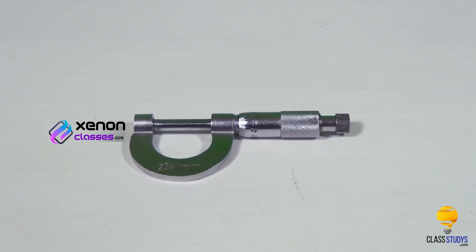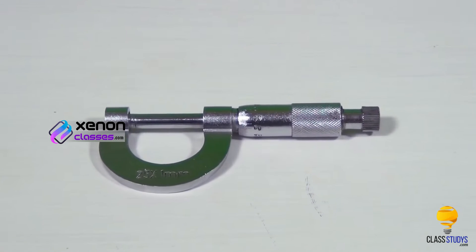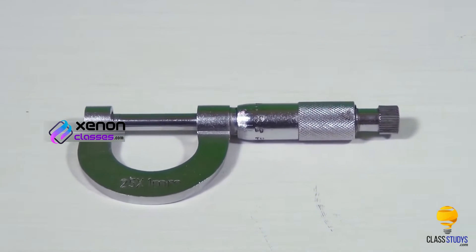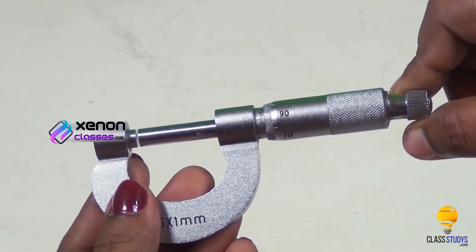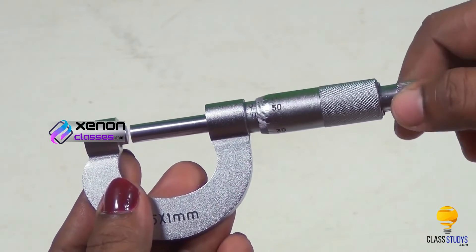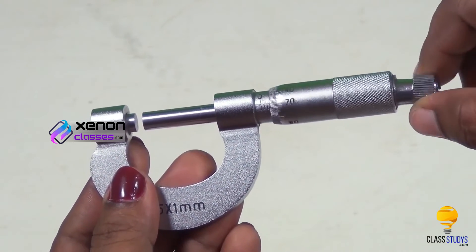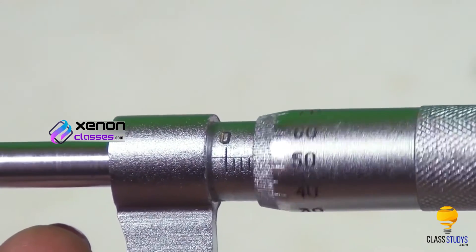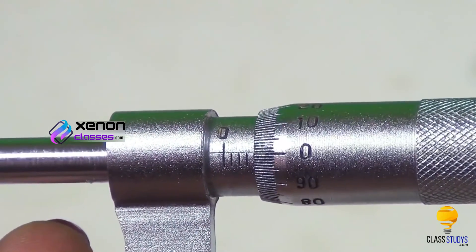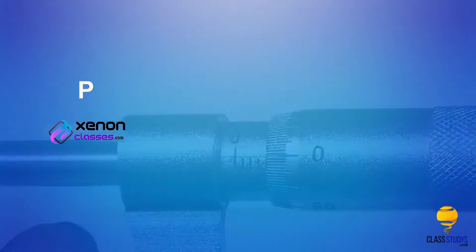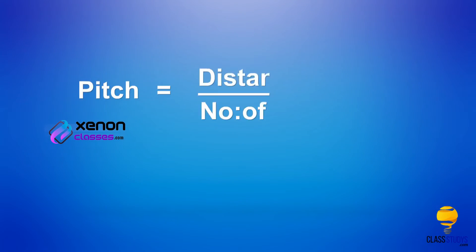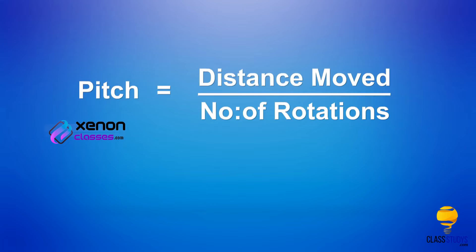First, to determine the pitch and least count of the screw gauge, rotate the screw four times and note that 4 mm has moved on the pitch scale. The pitch is equal to distance moved divided by number of rotations, which is 4 by 4, that is equal to 1 mm.